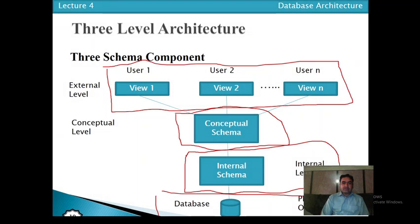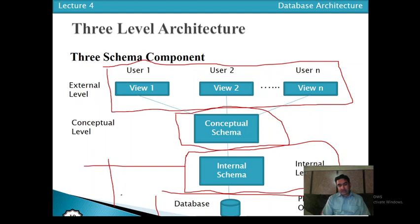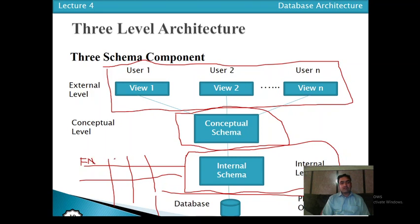We have different user views separated from the physical representation. We store data once in the database, but different users can view the same data differently. For example, a database may have first name and last name stored. One user may want to view the full name by concatenating first name and last name. Another user may want to view only the first initial of the first name combined with the last name.